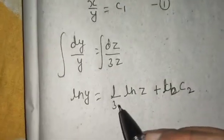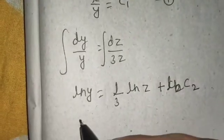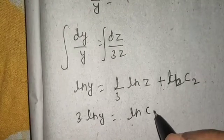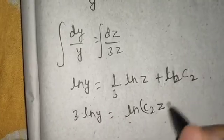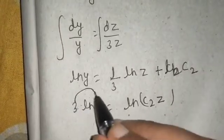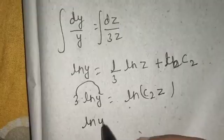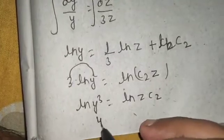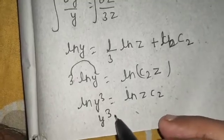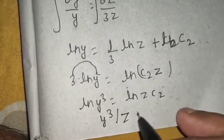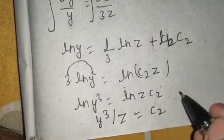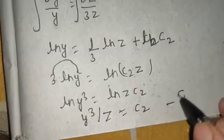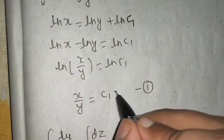Okay, so if you send this 3 to that side, 3 ln y equals to ln z C2. If you take this to the power, ln y³ equals to ln z C2. If you remove log from both side, you are going to get y³ divided by z equals to C2, because y³ equals to z C2, you can take z to this side. So this becomes equation number two.